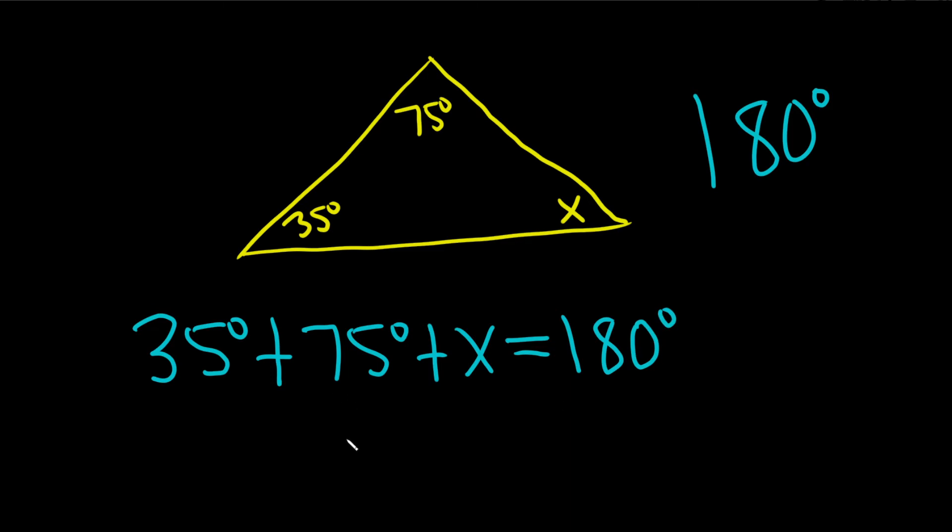So 35 plus 75 is 110 degrees plus x, that's equal to 180.